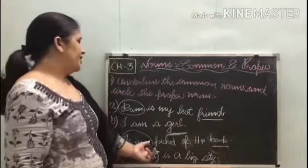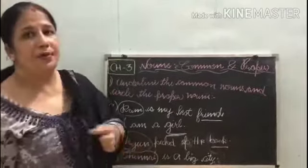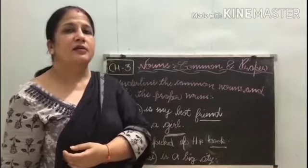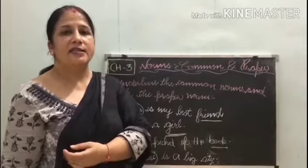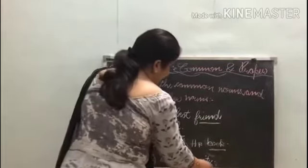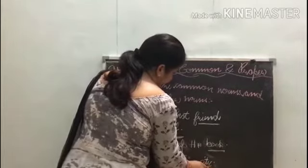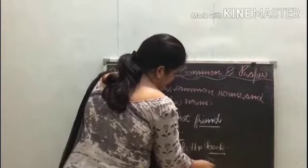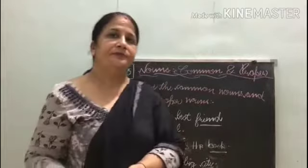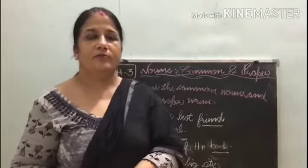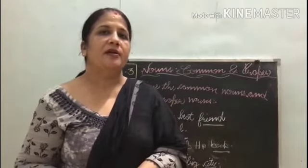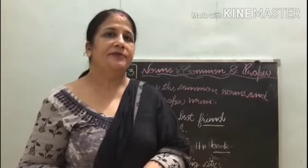Sentence is: Chennai is a big city. So 'city' kya hai isme? Common noun. Okay, clear students? Okay students, today's class is over. Thank you. Have a nice day.